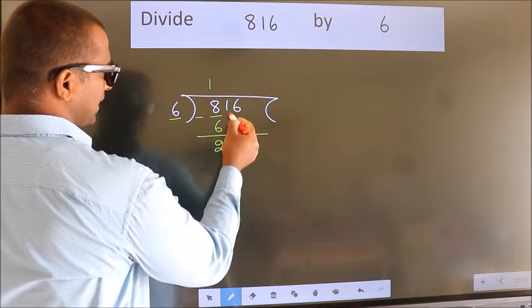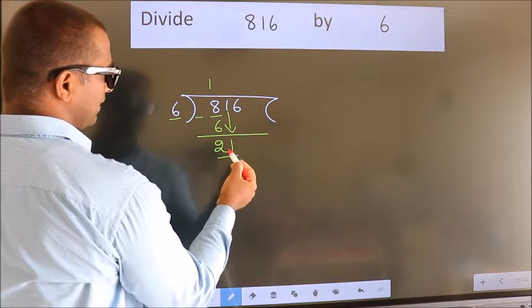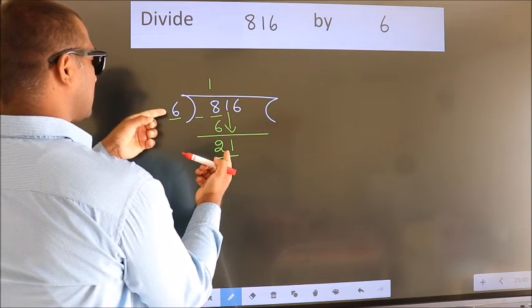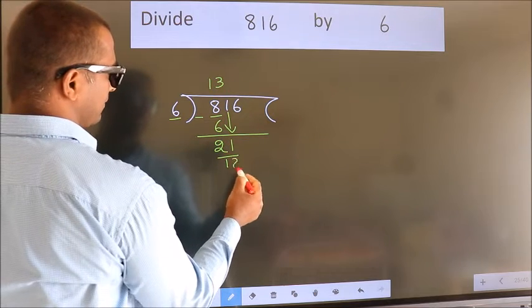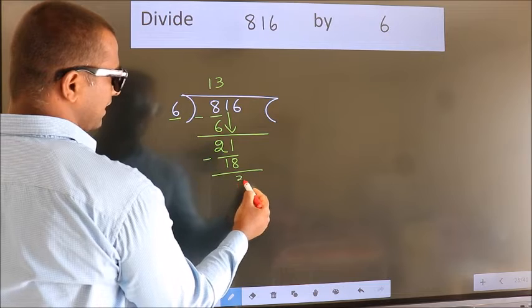After this, bring down the beside number. So 1 down. So 21. A number close to 21 in 6 table is 6 3s 18. Now we subtract. We get 3.